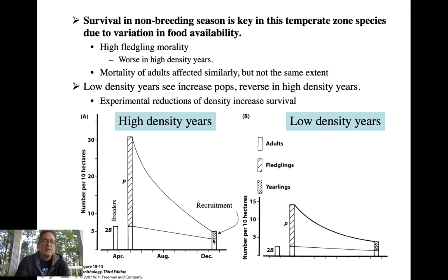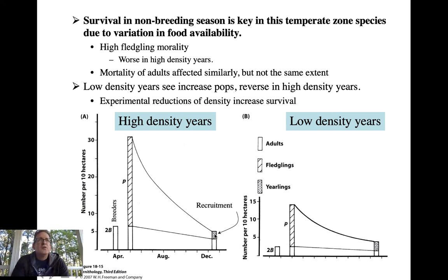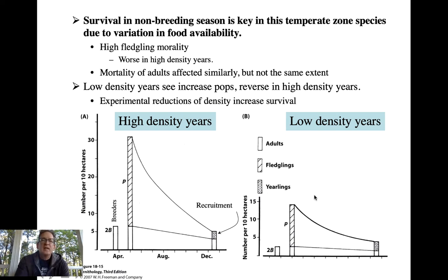Overall, the population has actually decreased. Adult survivorship plus recruitment of juveniles into the potential breeding population for the next year — what we call recruitment — has led to a declining population because of the negative impact of a high density year. The population which started here has actually decreased — so high density led to low recruitment and lower adult survival.